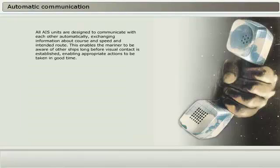All AIS units are designed to communicate with each other automatically, exchanging information about course and speed and intended route. This enables the mariner to be aware of other ships long before visual contact is established, allowing appropriate action to be taken in good time.